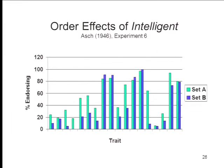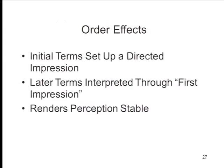The stimulus words themselves are the same in both sets; all that Asch did was vary the order. What Asch argued was that these order effects occur because each element in the stimulus set influences the meaning of the others. When you learn first thing that this person is very intelligent, you interpret all the other things you learn in light of that knowledge. If you only learn later that the person is intelligent, you've already formed an impression, and there's much less latitude for change. The initial terms set up a directed impression that directs perception one way, and later terms are interpreted through that first impression, rendering perception stable over time.